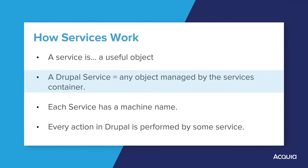The service container is also called the dependency injection container. In Drupal and in Symfony, there is a single object called the global container — it's basically an associative array of services. A service corresponds to exactly one class. The service container is very important as it contains the available services; it knows about their relations and configurations, and it even constructs them. The global service container holds every useful object in the system, and each service has a name.